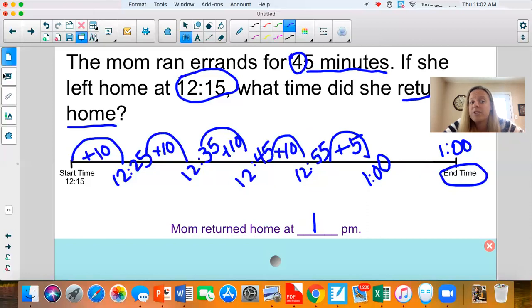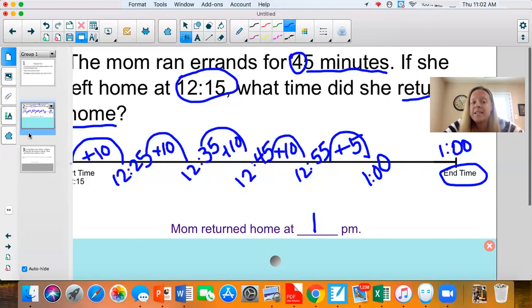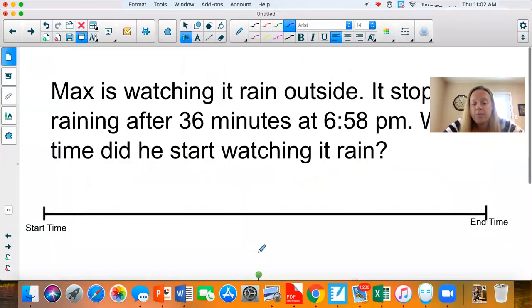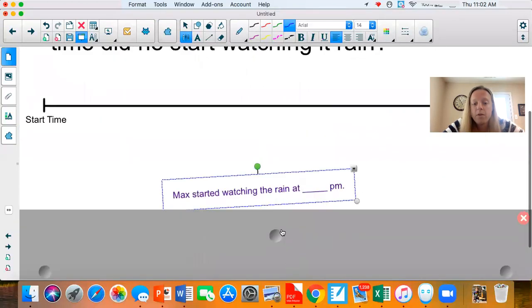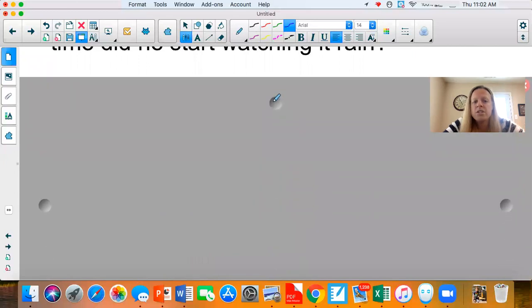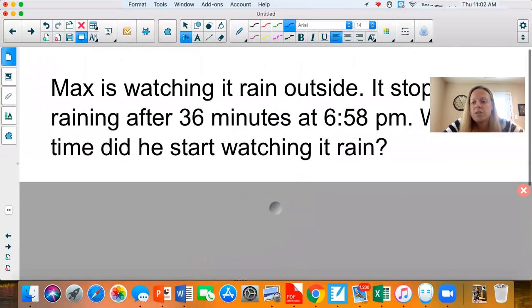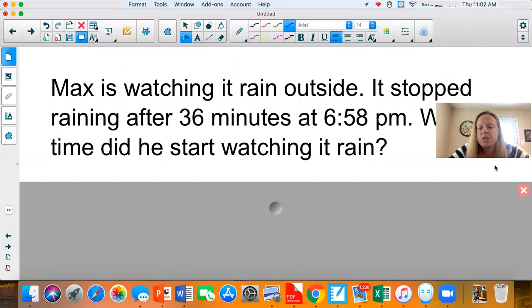I have one more problem for us to do together. This one is a little bit different. So pay attention and listen very carefully. So first, let's look at just the word problem before we start doing any of our work. So our second word problem says, Max is watching it rain outside. It stopped raining after 36 minutes at 6:58 PM. What time did he start watching it rain?